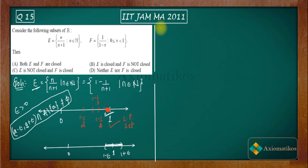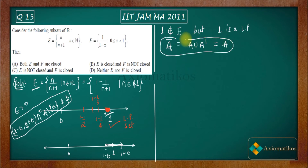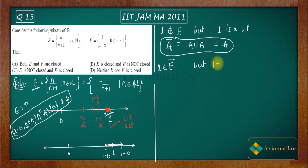Now what do we know about E? The point 1 does not belong to E, but 1 is a limit point of E. Recall that a set A is closed if its closure — A union A′ (the derived set) — equals A itself. Since 1 belongs to the closure of E but not to E, the closure of E cannot equal E. Therefore E is not closed.